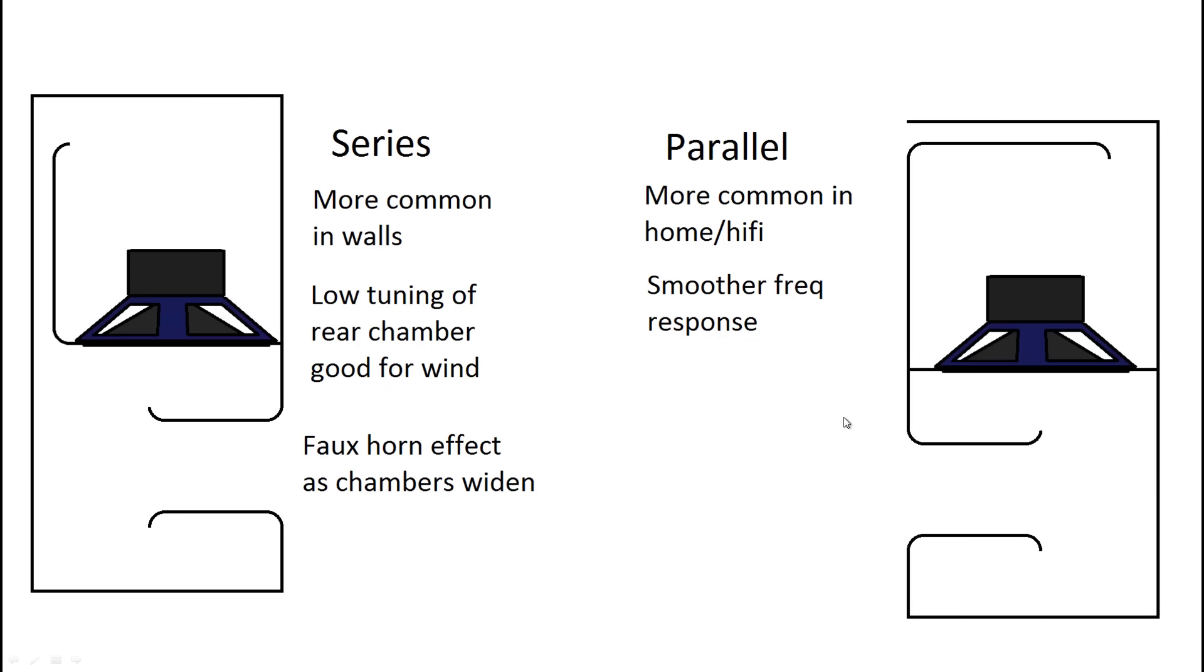And now onto sixth order band passes and the variants of sixth order band passes. There are two main variants. Series aligned and parallel. Series is more common in cars. This is when you look into a port of a car and you see all the subs and then you see ports up the back often. This is a series sixth order. Parallel is more common in home and hi-fi kind of thing.